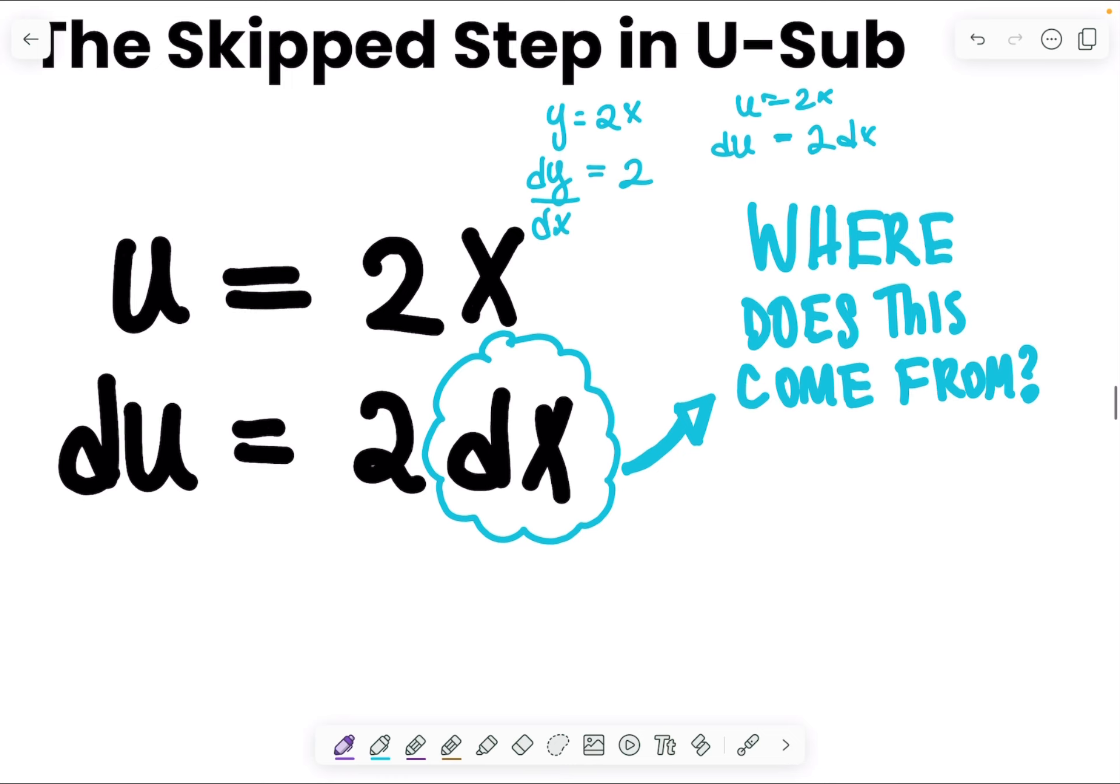And so the in-between step is just finding du dx, we know that's 2, and then solving for du by multiplying both sides by dx, and you get your du.